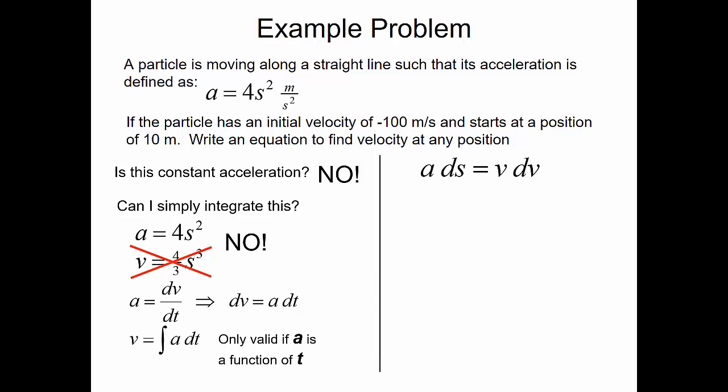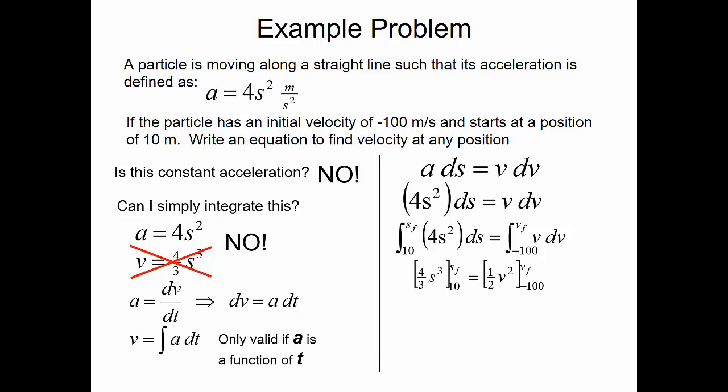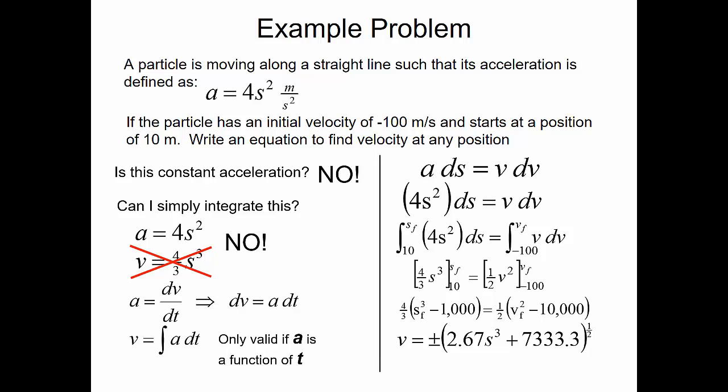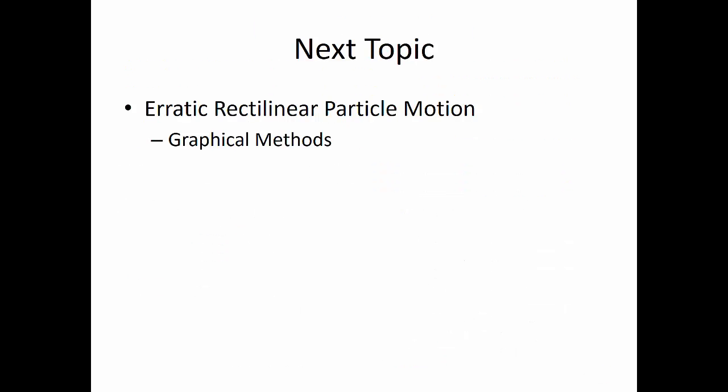So, what can we do? Let's look at using a·ds equals v·dv. In this case, we plug in our equation for a, which is 4s squared, then integrating both sides — with limits of integration for position from 10 to the final position, and for velocity from minus 100 to the final velocity — we get 4/3 s cubed evaluated from 10 to the final position, equal to 1/2 the velocity squared evaluated from minus 100 to the final velocity. Simplifying, we find that the velocity is equal to plus or minus the square root of 2.67s³ plus 7,333.3. But this gives us two answers, positive and negative. We know this must be negative in order for the velocity to equal minus 100 at a position of 10. Our next topic is erratic rectilinear particle motion, graphical methods.